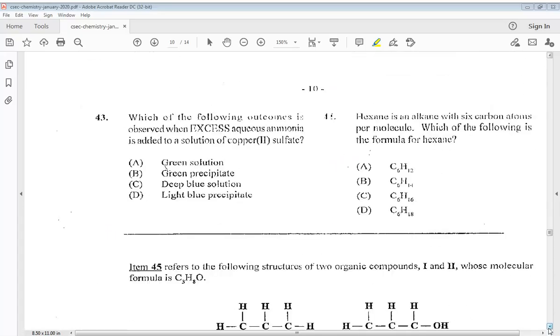Question 43. Which of the following outcomes is observed when excess aqueous ammonia is added to a solution of copper 2 sulfate? So is it A green solution, B green precipitate, C blue solution, or D light blue precipitate. So the answer is C blue solution.